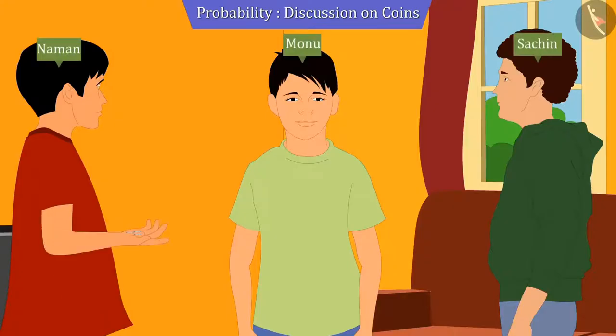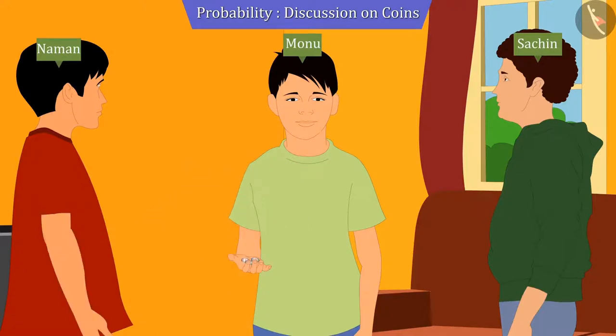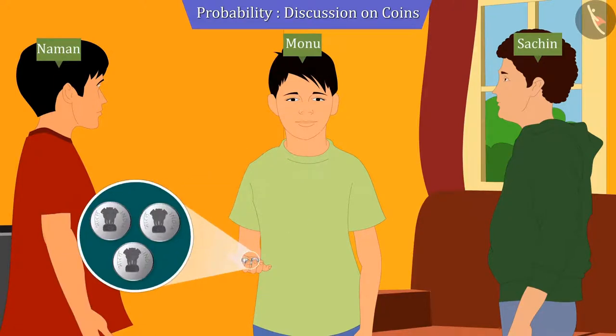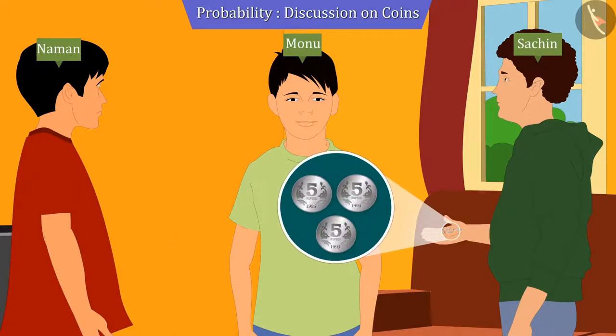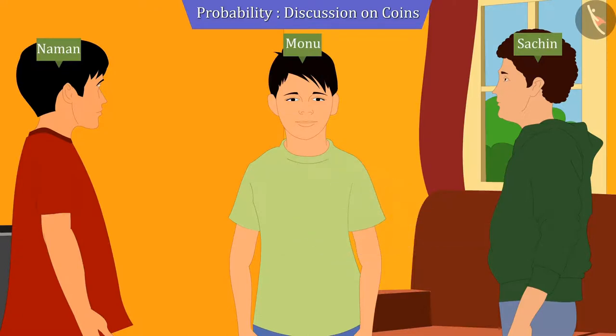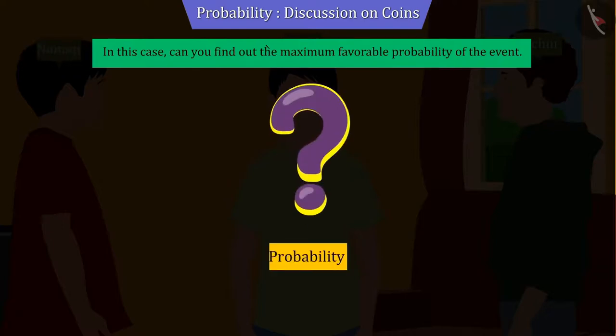Naman says that on tossing three coins, if the outcome is exactly two heads and one tail, he will start the game. While Monu says that he will play when exactly three heads come together. And Sachin says that he will play when exactly three tails come together. So, in this case, can you find out the maximum favorable probability of the event as to who can start the game?